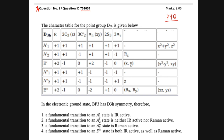Let us look at the options one by one. Option A says a fundamental transition to an A1-dash state is IR active. To be IR active, the third column of the character table must contain X, Y, or Z. A1-dash does not have X, Y, or Z there, so it is IR inactive. Therefore, option A is incorrect.